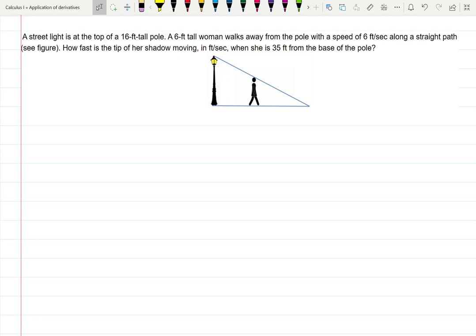A woman that walks away from the pole, or basically the shadow example, is a very classical related rates problem. So let's read. We have a 16 feet tall pole that's a fixed number, and also a six feet tall woman is included into the problem. That's a fixed number as well, constant.